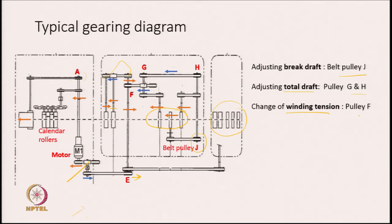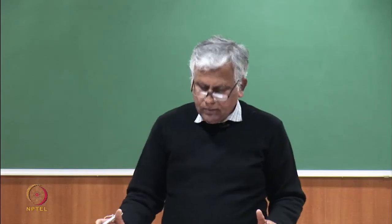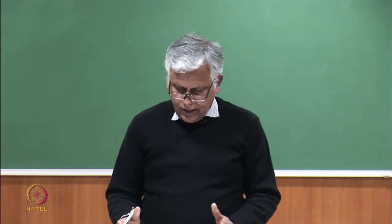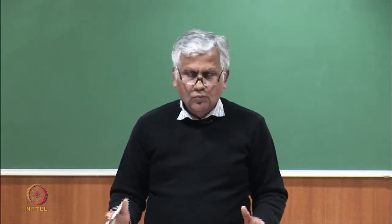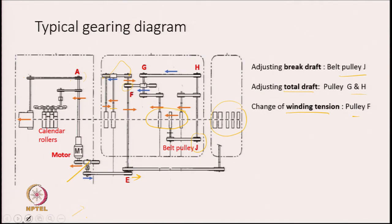If we want to change the winding tension, pulley F is there. By changing the diameter of this pulley, the winding tension can be changed. We have to carefully look at the diagram and see how the motion is flowing to different elements of the machine and what the various change pulleys are, and what is going to happen when the change pulleys are changed in terms of their diameter. This is a typical machine — the construction is simple and the drive diagram is also simple. We have textile machines where the drive is much more complex in nature.